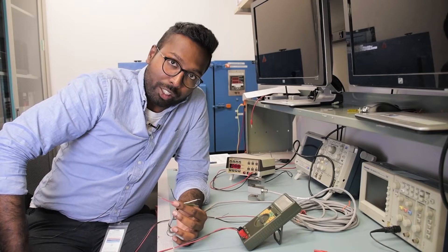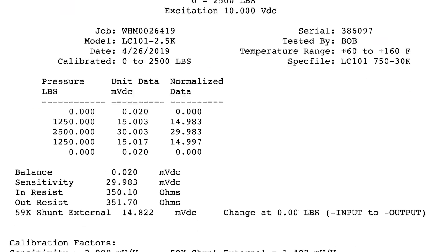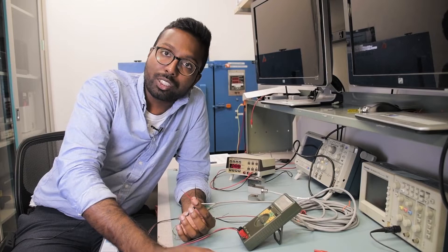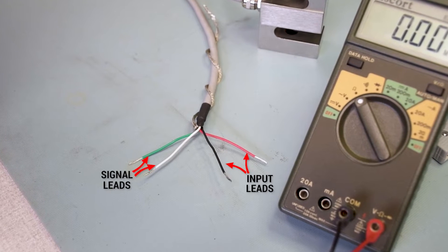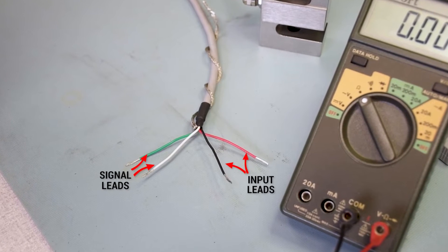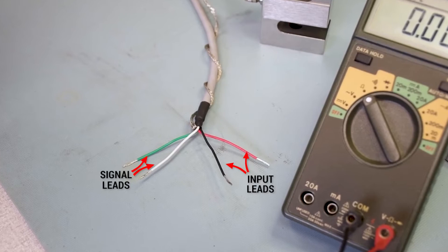If you look in the calibration certificate that you receive with a load cell, you should see input resistance and output resistance values. Input resistance is the resistance across the two input leads that go into the load cell, and the output resistance is the resistance across the signal leads—the signal that comes from the load cell.